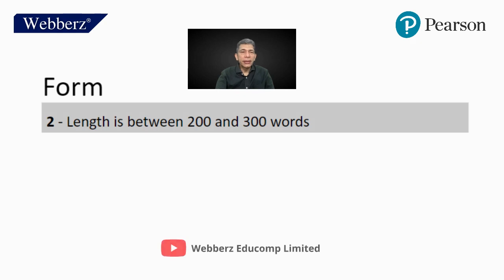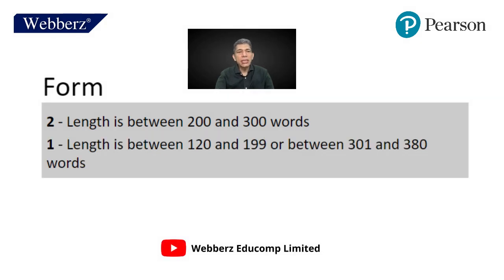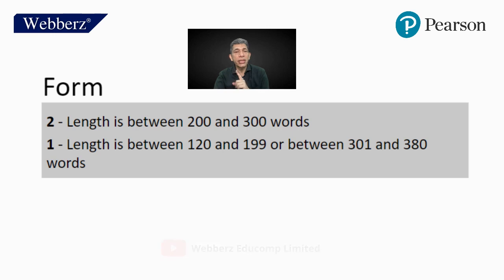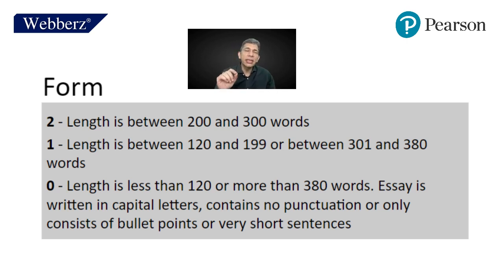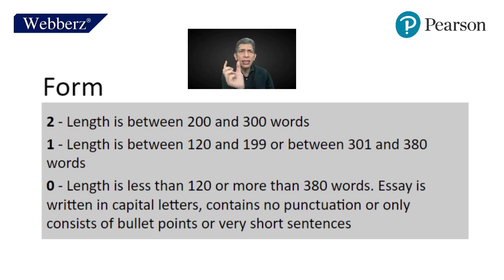For form, you get two if the length is between 200 and 300 words. You get one if the length is between 120 and 199 words, or above 300 to 380 words. You get zero if it is less than 120 or more than 380 words, if it is written in all capital letters, if it contains no punctuation, if you use bullet points, or if the sentences are very short.